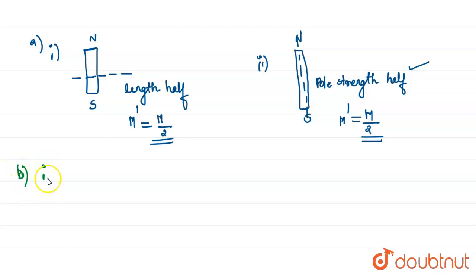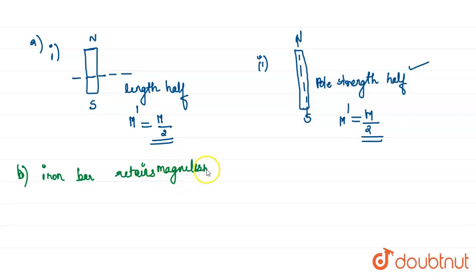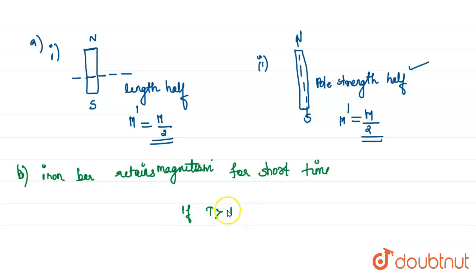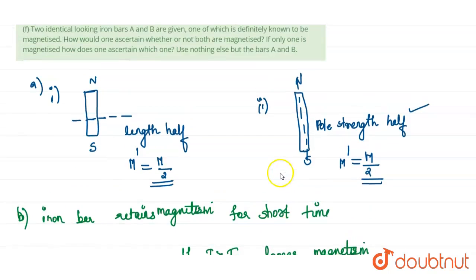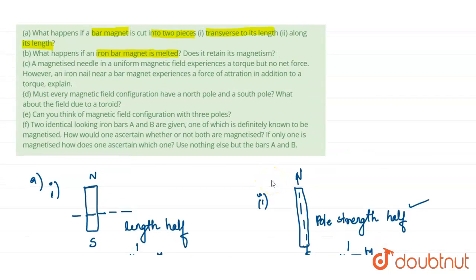An iron bar retains magnetism for a short time. When we melt it, the temperature increases. If the applied temperature is greater than the Curie temperature, what happens is that it loses its magnetic nature. So when an iron bar is melted and the temperature rises above the Curie temperature, it loses its magnetism.